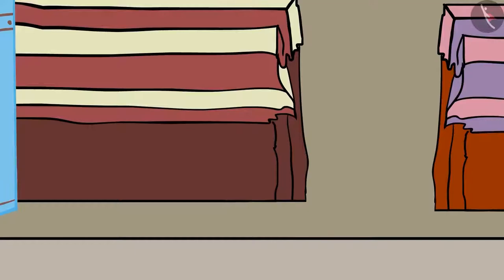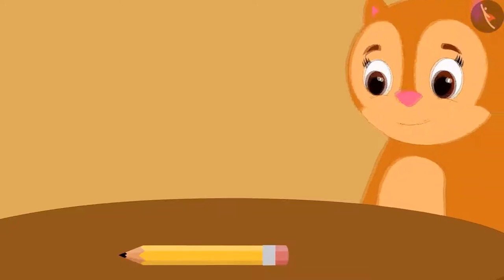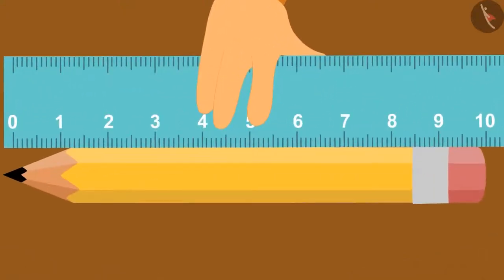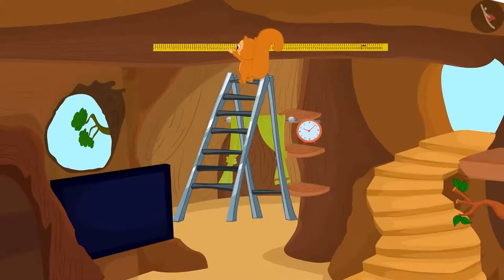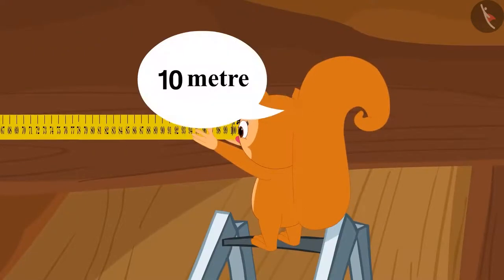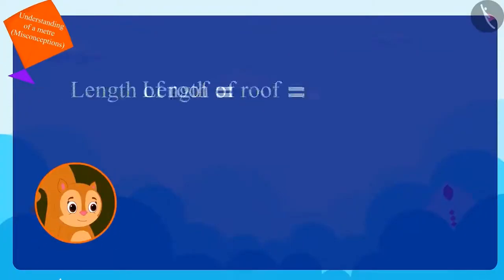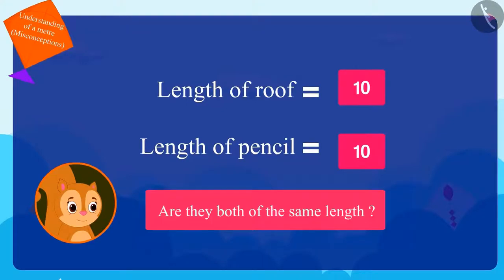Chanda gave uncle the measurement of her curtains and returned home. After returning home, she measured her pencil with a ruler and found that the pencil is ten centimeters in length. Then she measured the length of her roof with her measuring tape and found that the roof was ten meters long. Chanda started thinking that the length of both her roof and pencil is ten and ten — so are they both of the same length?